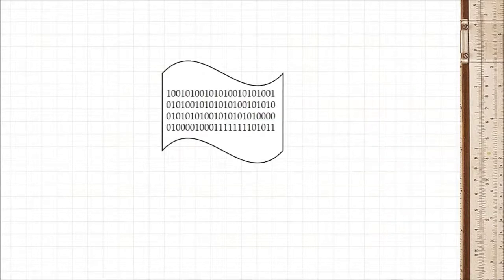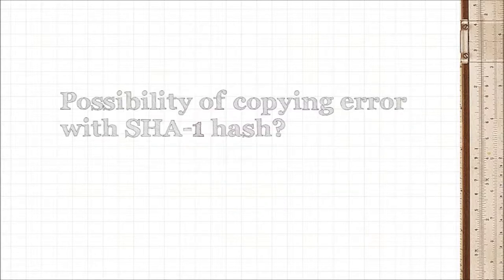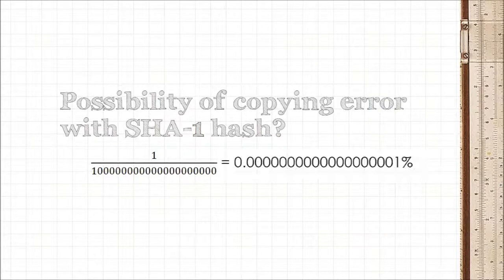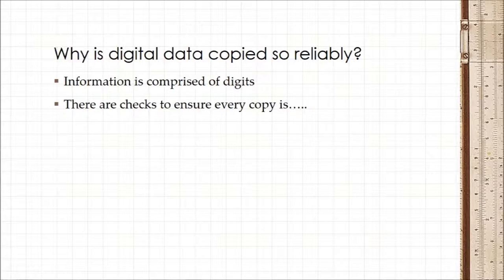Computers that operate in the digital world have similar things called checksums and hashes that protect the integrity of the data at every copy. Hence, while there are still copying errors in digital data, they are very rare, simply because the information is comprised of digits and there are checks to ensure that each copy is, in a word, perfect.